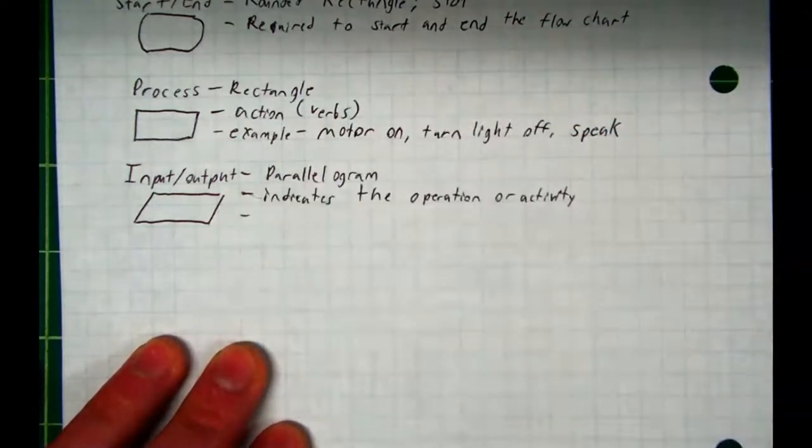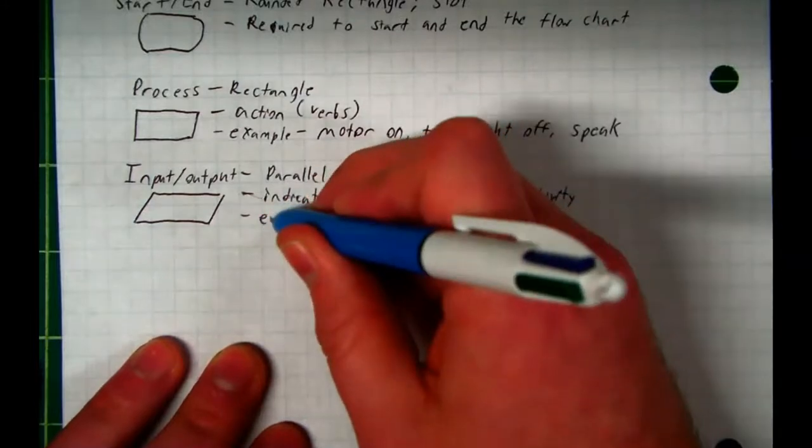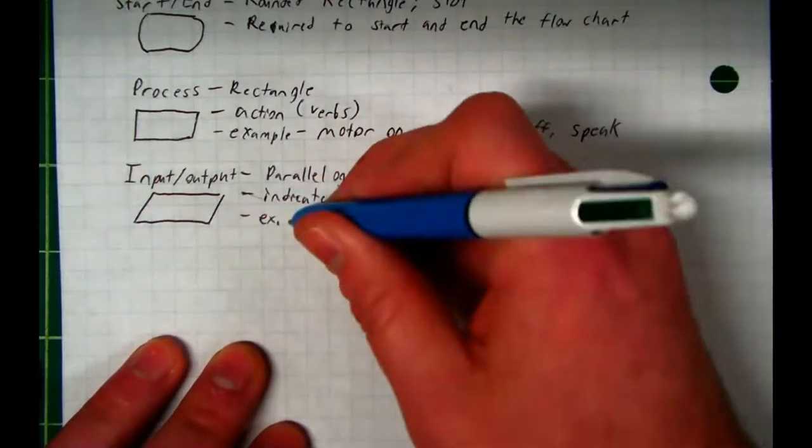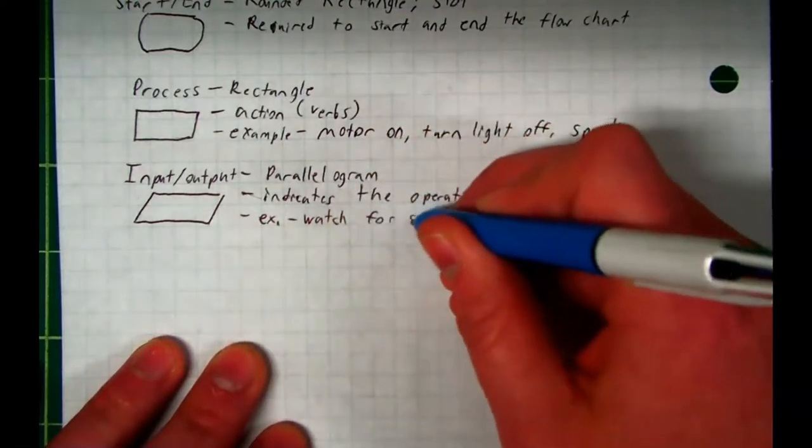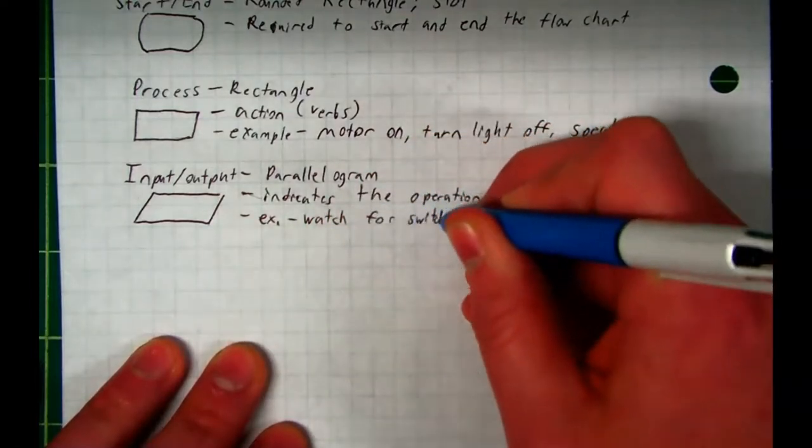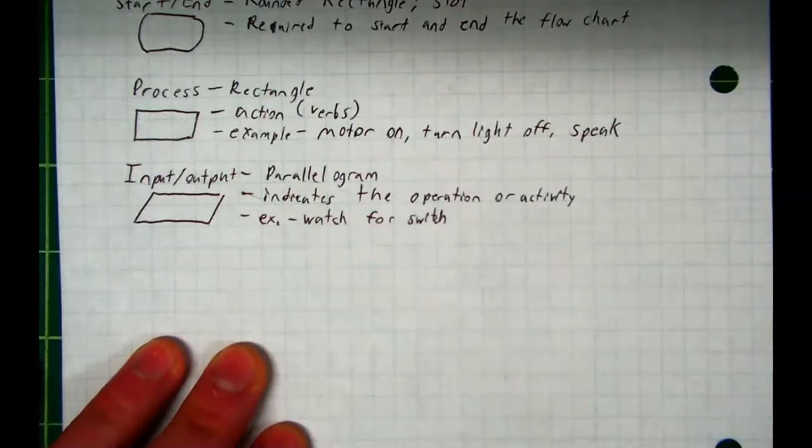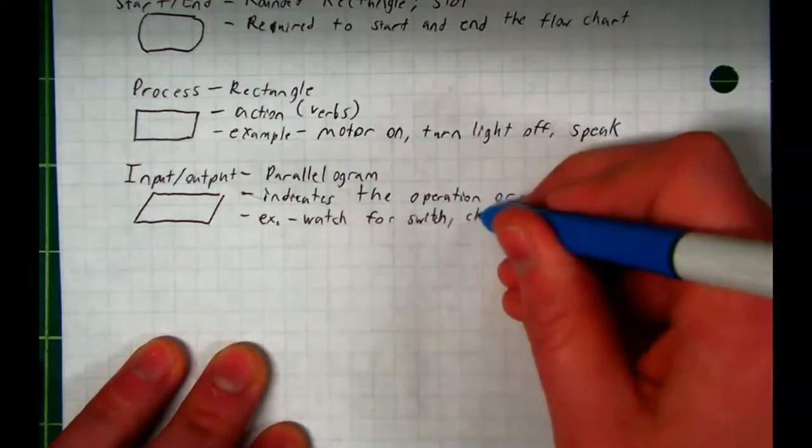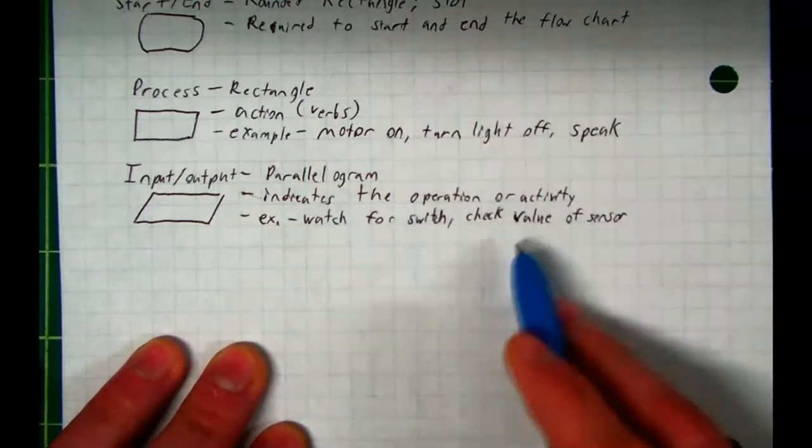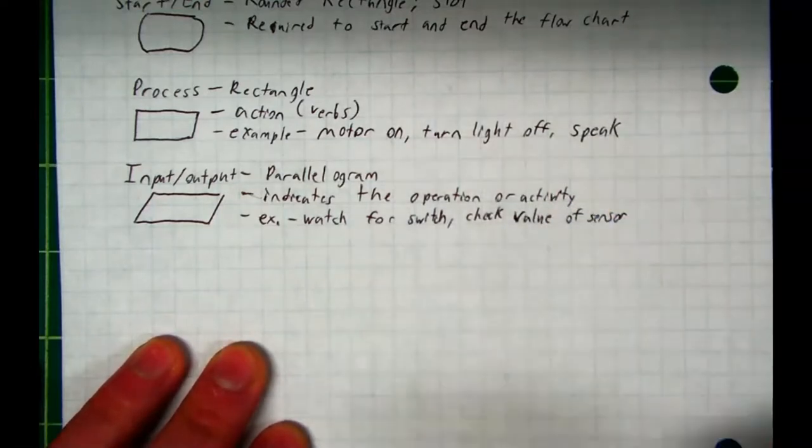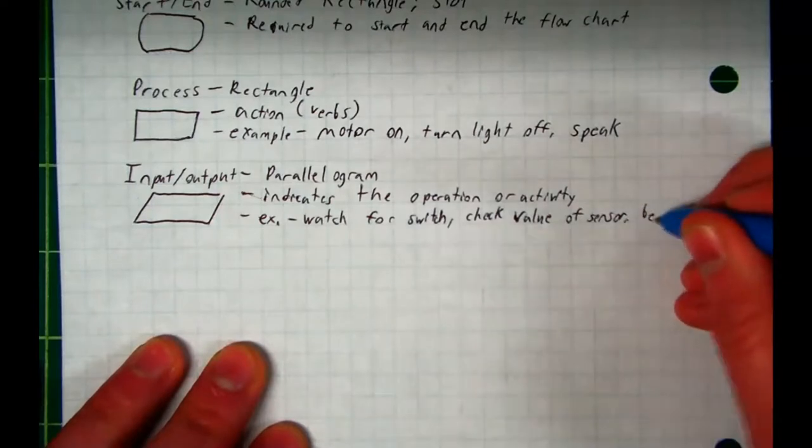An example of an input or an output would be something like watch for a switch to be pushed, or check value of the sensor. In other words, reading the sensor value, or begin a timer.